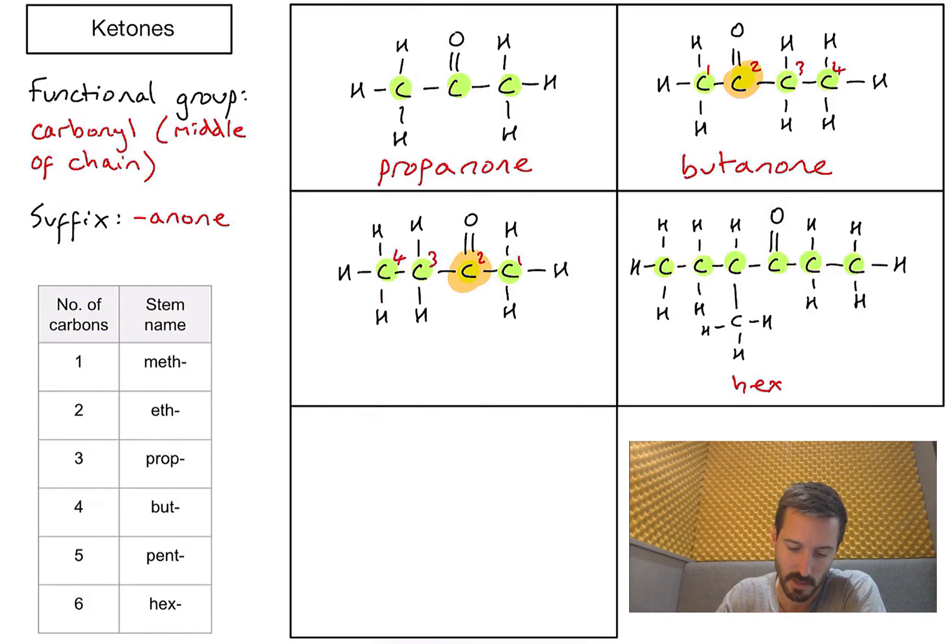I'm going to number my carbons to put that carbonyl functional group as close to carbon number one as possible. To do that, I'm going to have to label them from right to left. One, two, three, four, five, six.